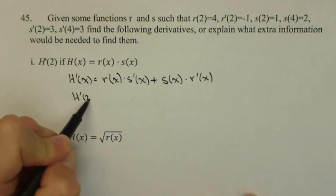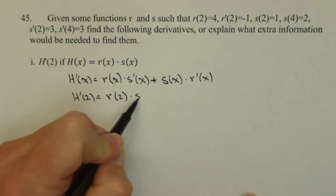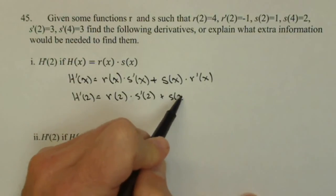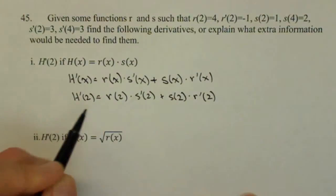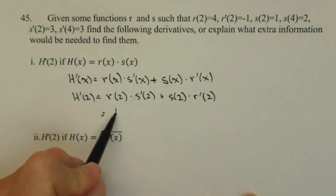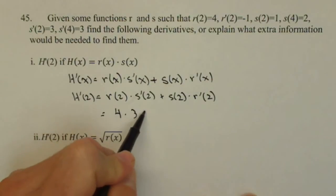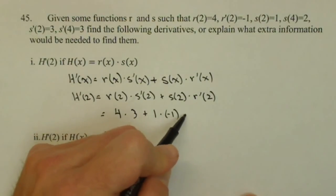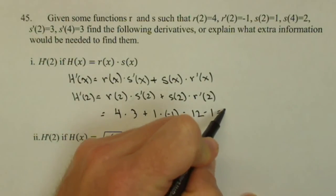So then H prime of two would be r of two times s prime of two plus s of two times r prime of two. So now we need to see if we have those values: r of two is four, s prime of two is three, s of two is one, and r prime of two is negative one, so we have 12 minus one, or 11.